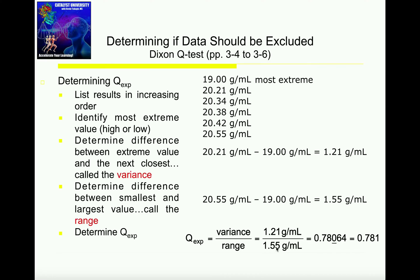Initially, you get something like 0.78064, but considering I want to maintain my significant digits, I'm going to round this off to 3, which is 0.781. Notice that Q experimental is unitless. That's because both of these are densities with grams per mL units, so both of those units end up canceling out. My Q experimental is 0.781.